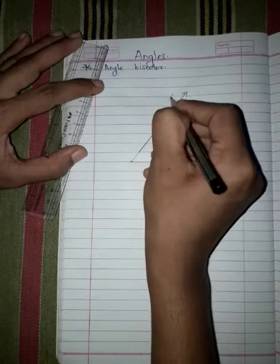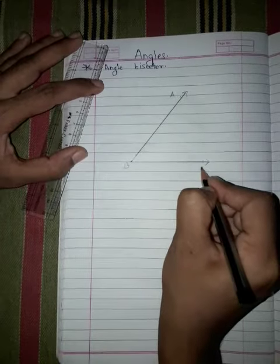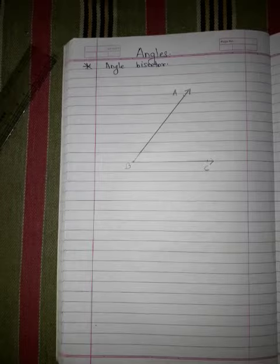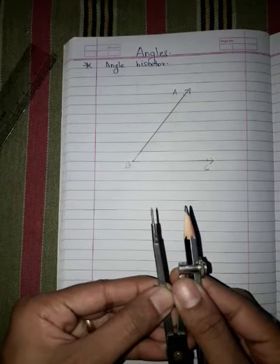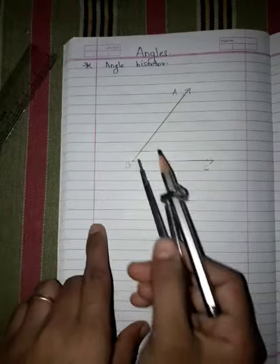Angle ABC. Now with the help of a compass we will take small distance, place the sharp point edge at point B and cut an arc.